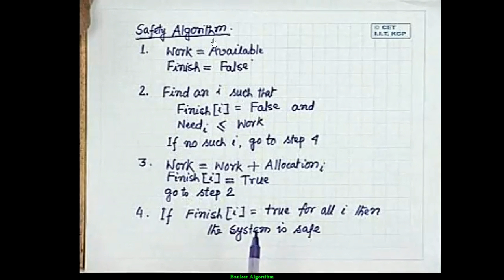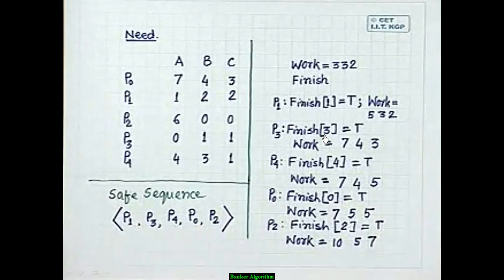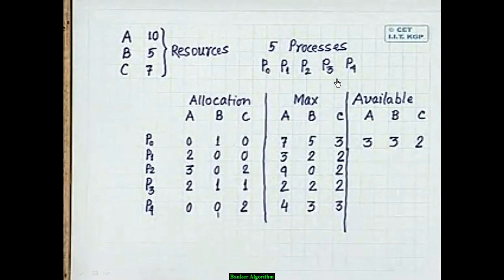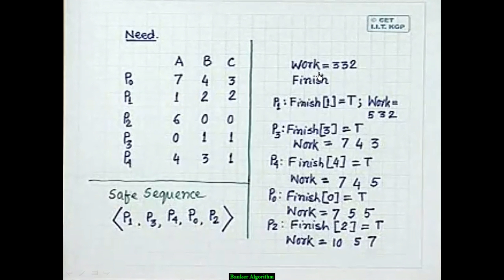Now apply the safety algorithm. Set Work = Available = [3, 3, 2], Finish = false for all. Check P0: its Need is [7,5,7] — not less than Work [3,3,2], so skip. Check P1: Need = [1,2,2] ≤ [3,3,2], so we take it.